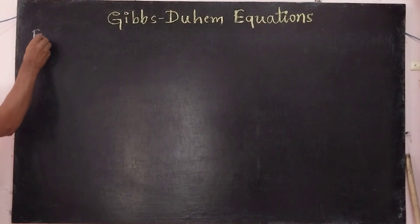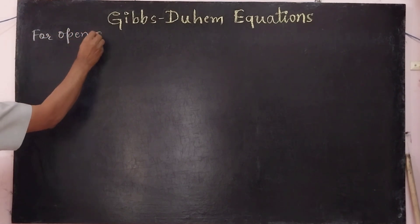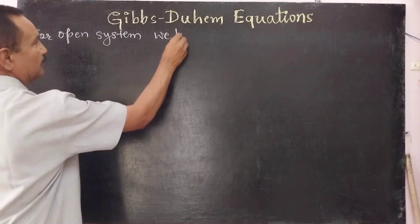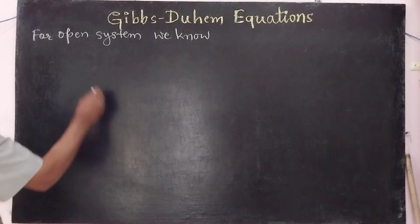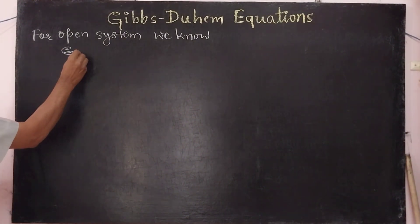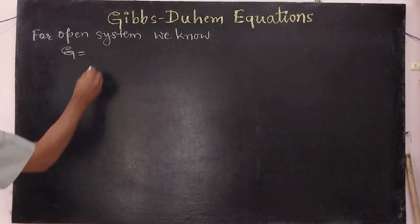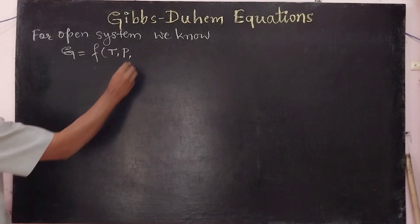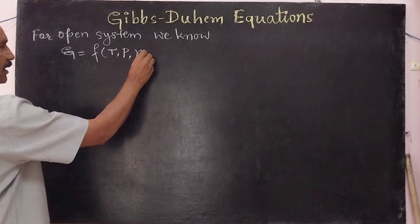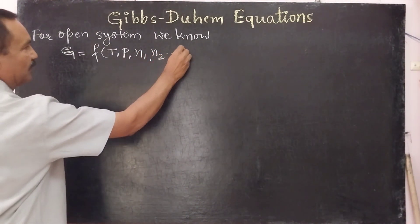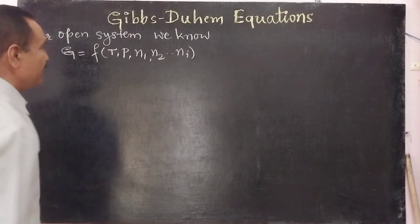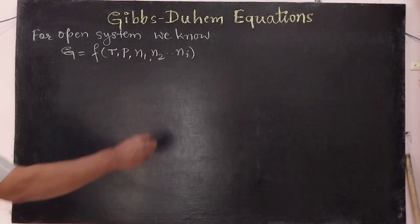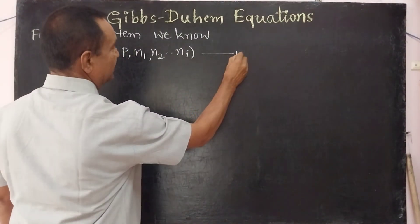For an open system, we know that the Gibbs free energy G is a function of temperature, pressure, and the number of moles of components N1, N2, up to Ni. Thus, the Gibbs free energy is a function of temperature, pressure, and the number of moles of the various components. This is equation 1.